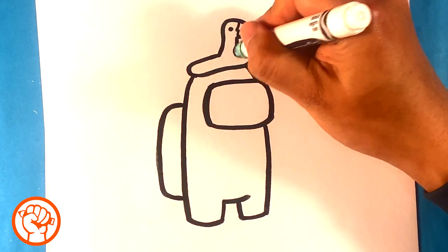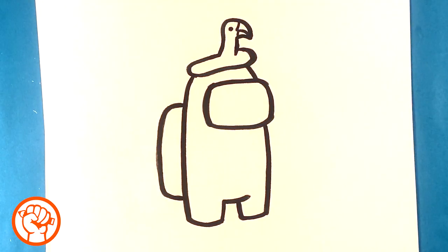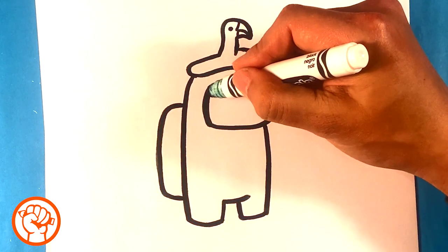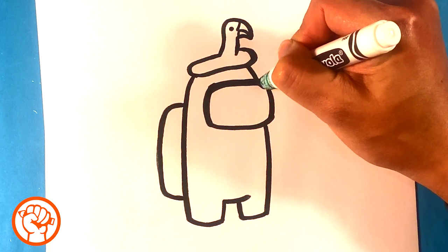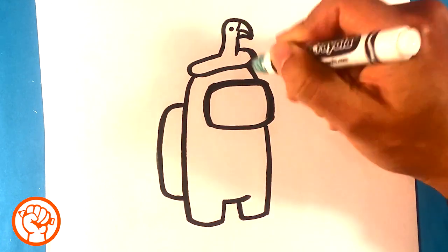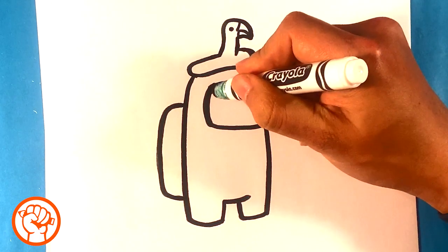Next thing I'm going to do is I'm going to thicken the line everywhere, because I wanted to match the animation from the game, and the game has extremely thick lines. So I'm just going to thicken up the line everywhere.